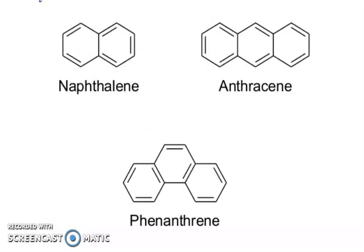You can see naphthalene, anthracene, and phenanthrene. These three compounds are examples of polynuclear aromatics: naphthalene, anthracene, and phenanthrene.